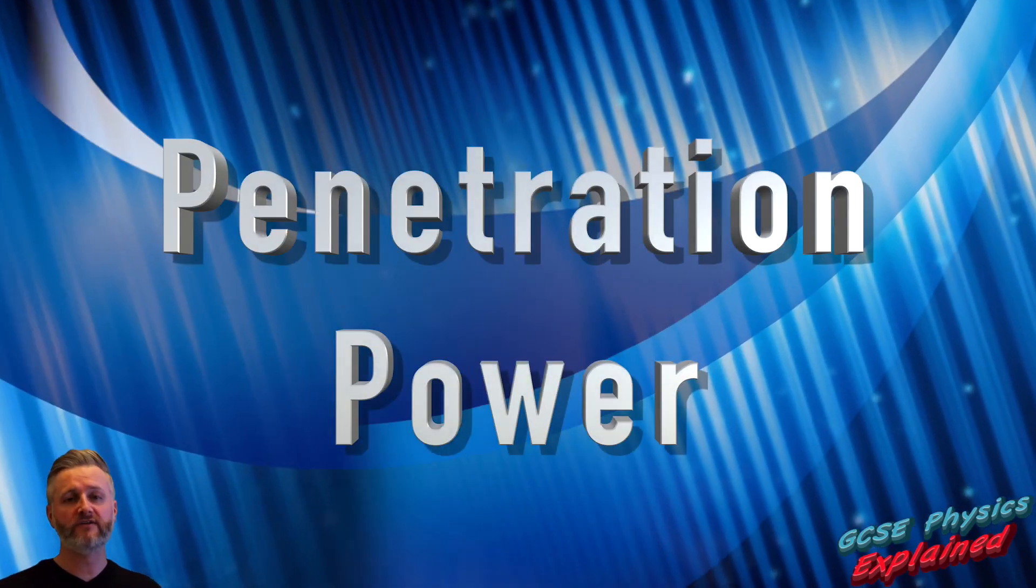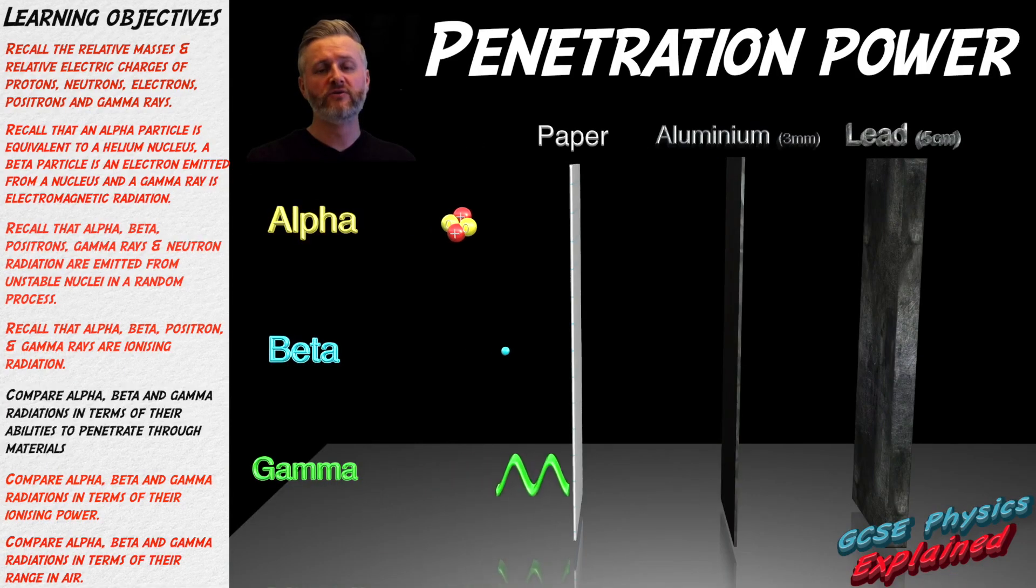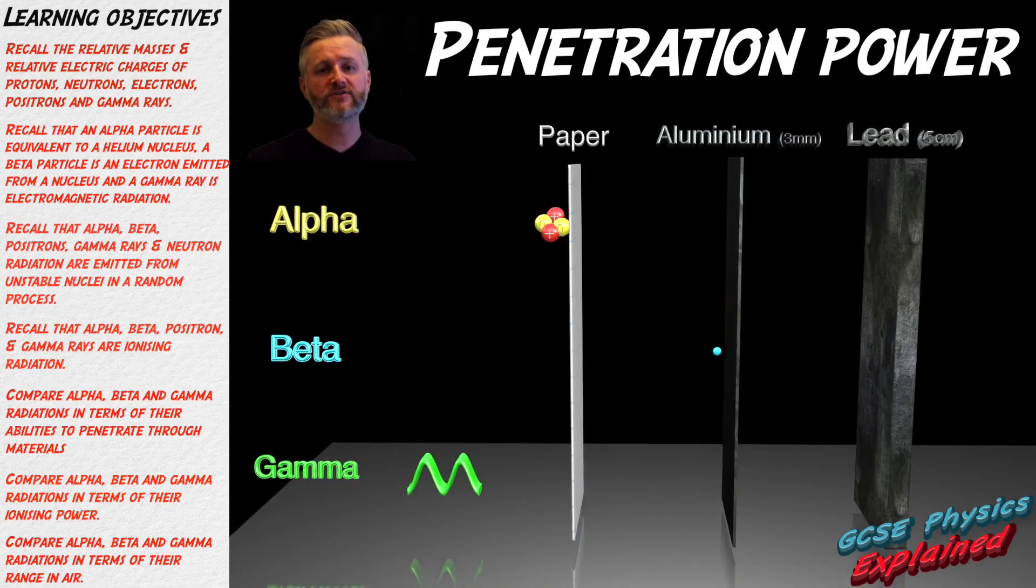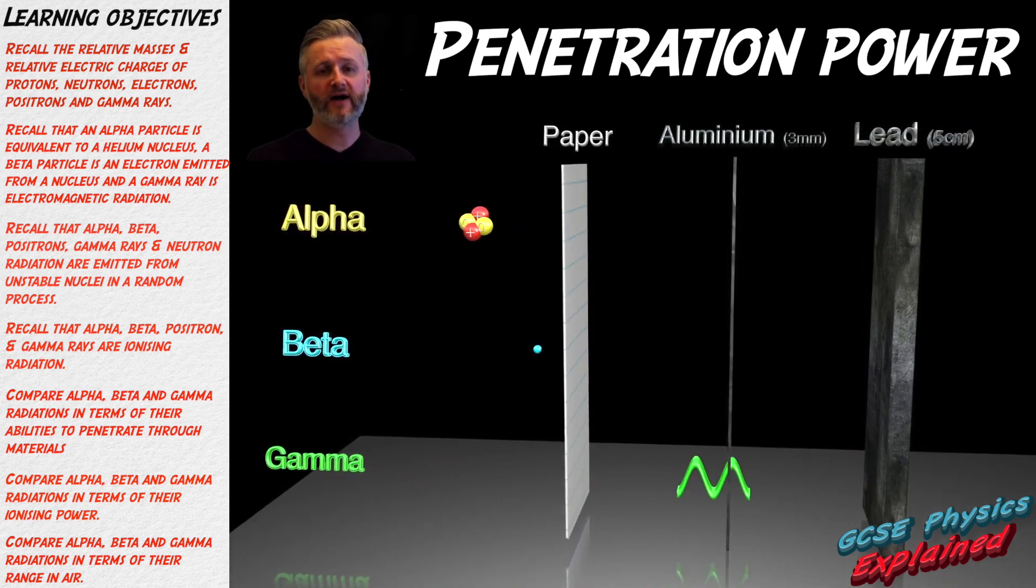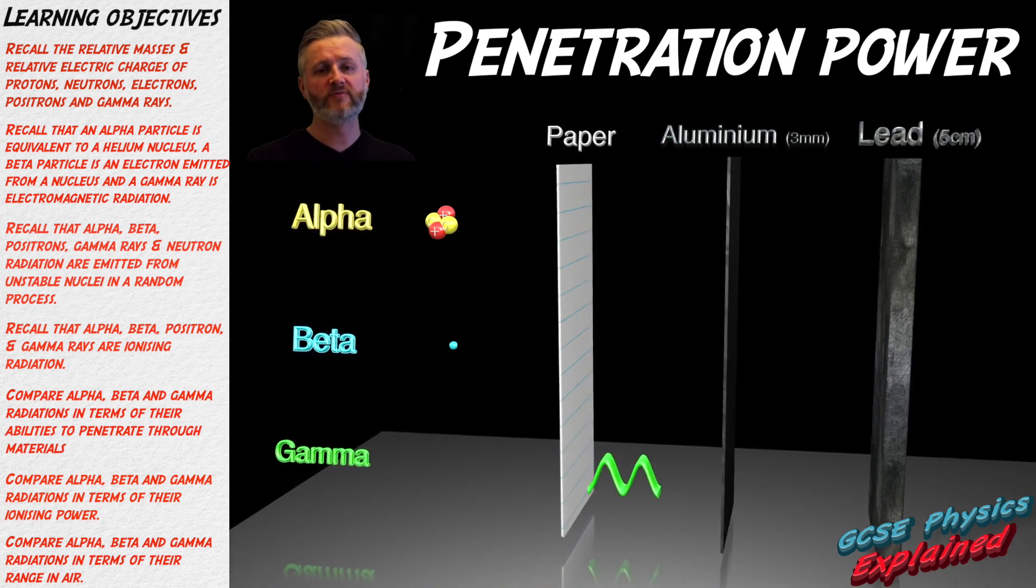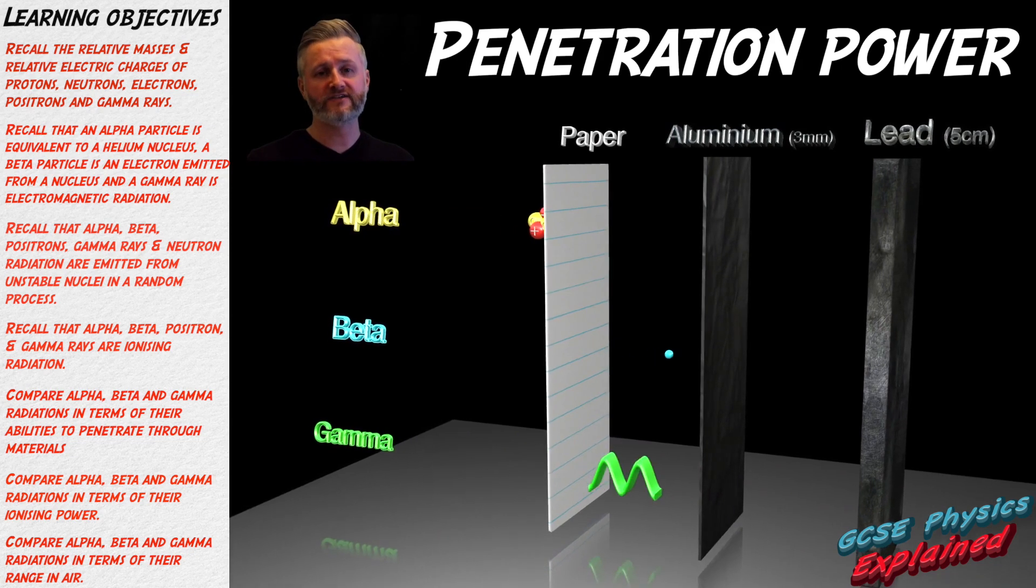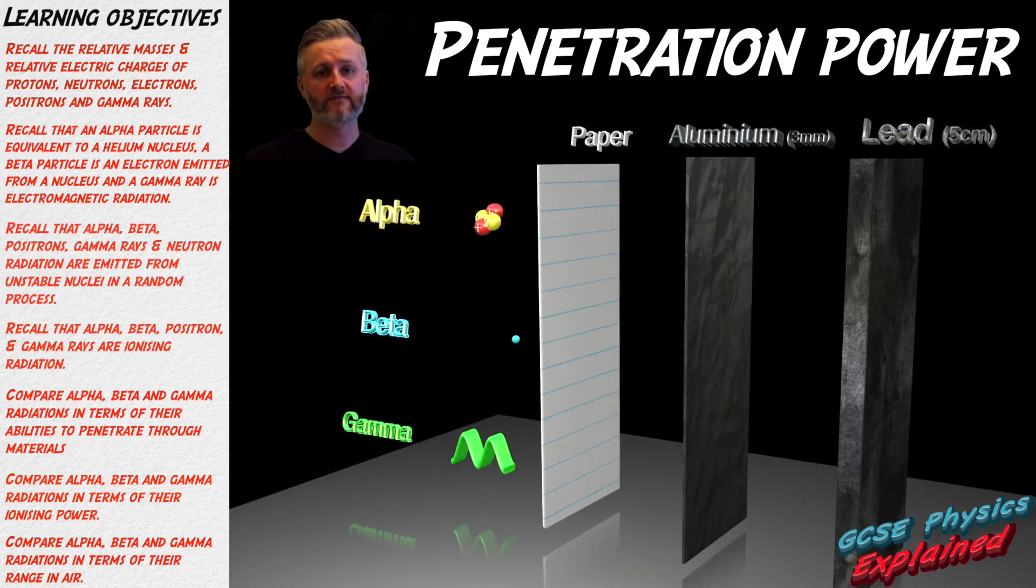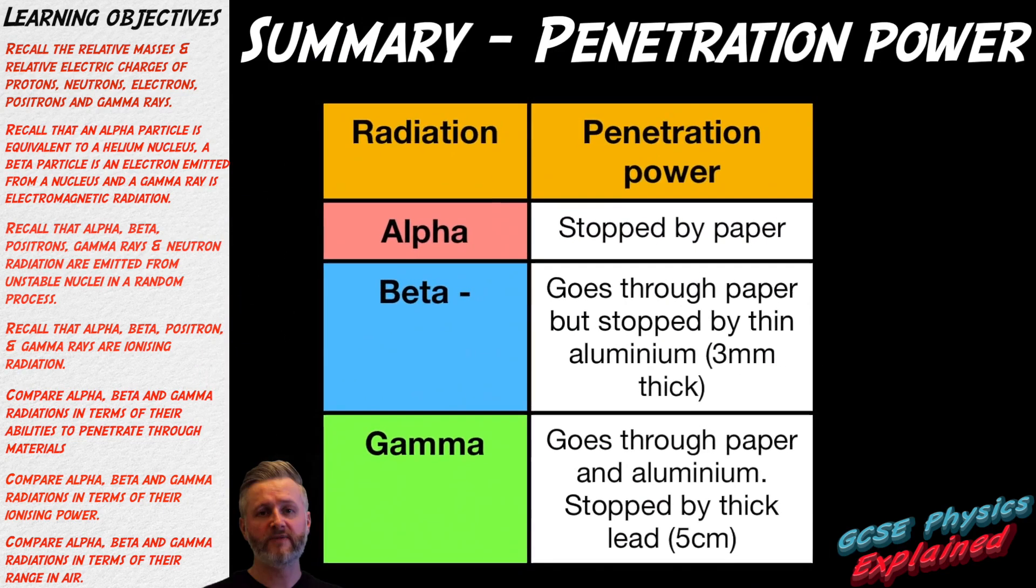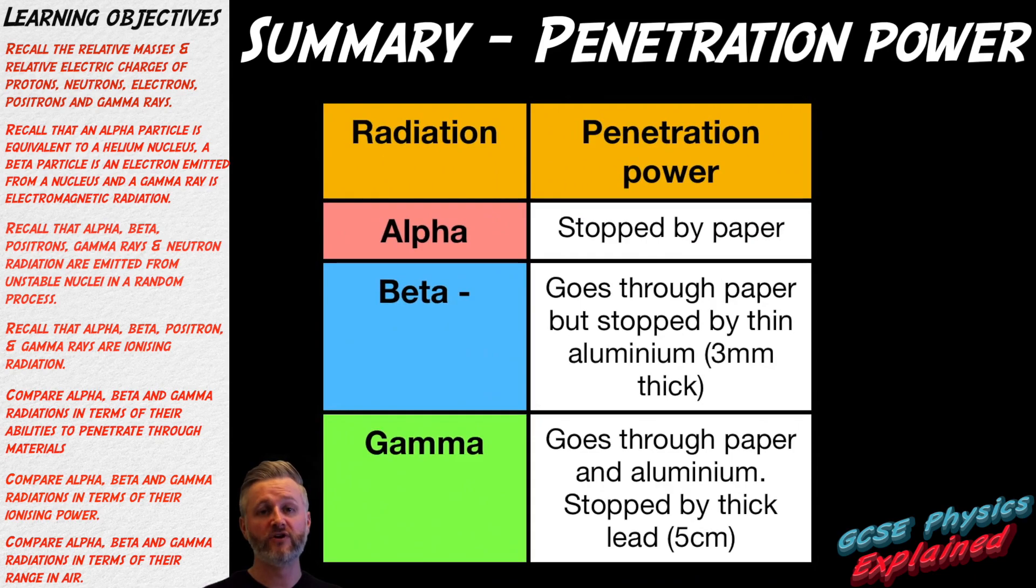Penetration power of nuclear radiation. You need to know what material is required to stop alpha, beta and gamma. Alpha is stopped by paper. Beta is stopped by aluminum that is three millimeters thick. Gamma is stopped by lead that is five centimeters thick or concrete that is a few meters thick. Here is a summary of the penetration powers of nuclear radiation that you need to know for your exams.